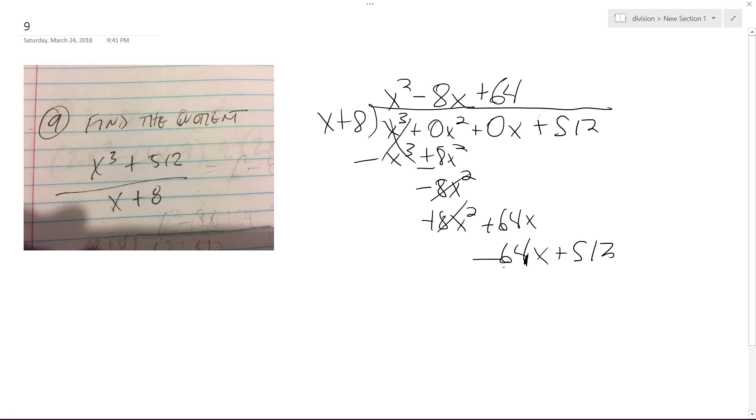Switch the signs, and that goes in there perfectly. So when you have x cubed plus 512 divided by x plus 8, we end up perfectly with x squared minus 8x plus 64. And that's it.